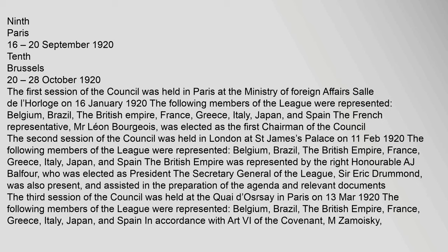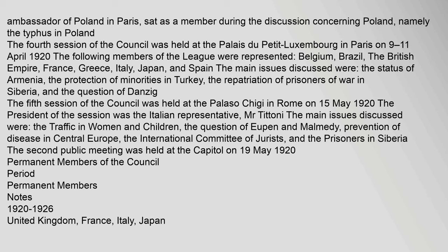The third session of the Council was held at the Quai d'Orsay in Paris on 13 March 1920, with Belgium, Brazil, the British Empire, France, Greece, Italy, Japan, and Spain represented. In accordance with Art. V of the Covenant, M. Zamoysky, Ambassador of Poland in Paris, sat as a member during the discussion concerning Poland — namely the typhus in Poland. The fourth session was held at the Palais du Petit Luxembourg in Paris on 9–11 April 1920. The main issues discussed were the status of Armenia, the protection of minorities in Turkey, the repatriation of prisoners of war in Siberia, and the question of Danzig.